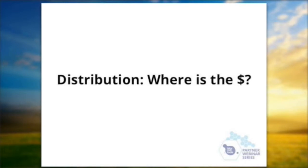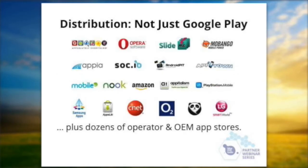Distribution — so where's the money at? We have to broaden our minds beyond Google Play. When we work with our merchants at Fortumo, we help them distribute to over 30 different app stores. Carriers also have app stores, as well as OEMs. In markets where carriers are very strong and buy a lot of phones, the carrier gets to say how things work and puts their app store on the phones. In markets where carriers are smaller or weaker, generally the OEM app store goes on the phone. In emerging markets you have a lot more levers to pull in order to get distribution.